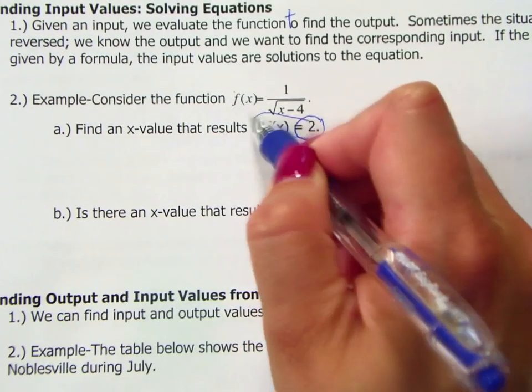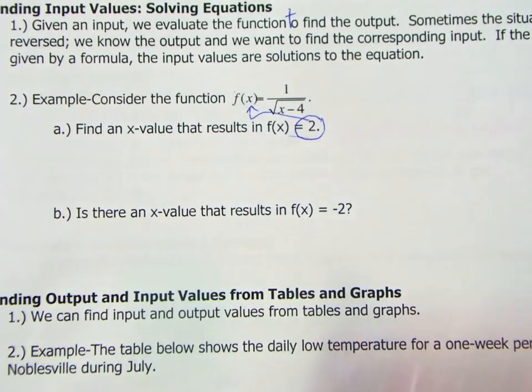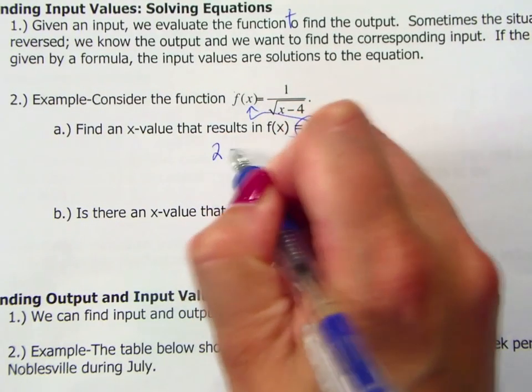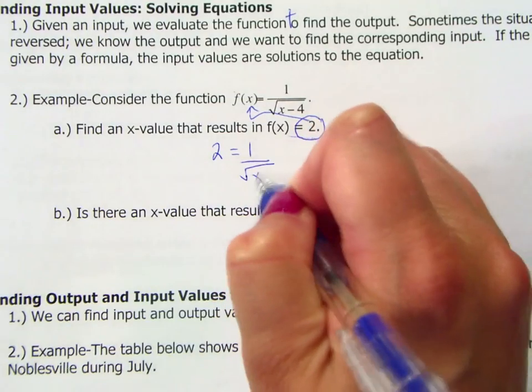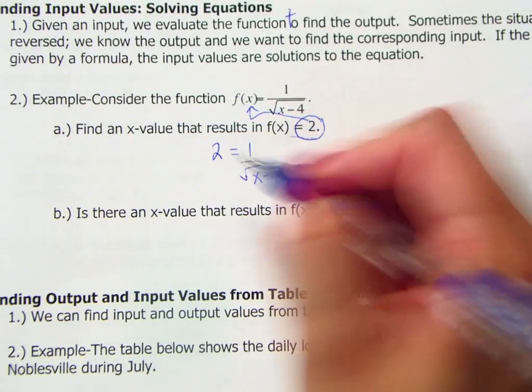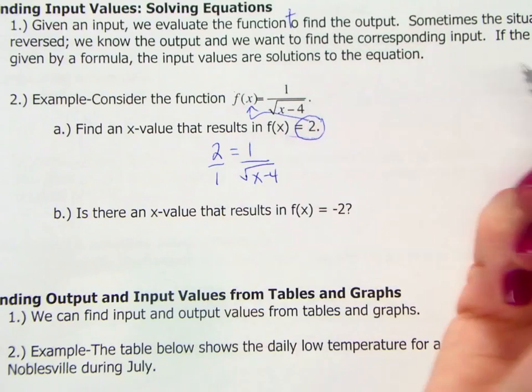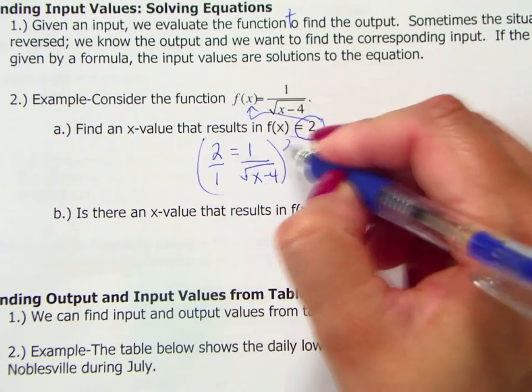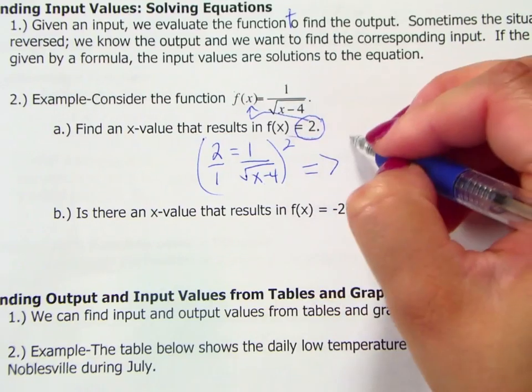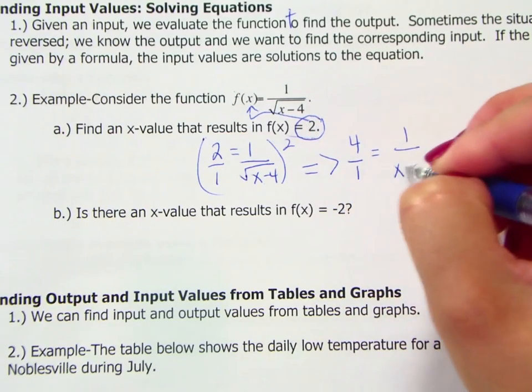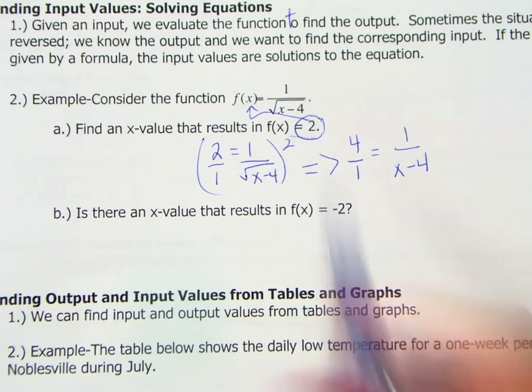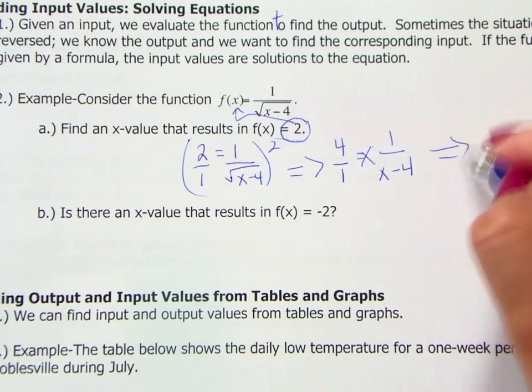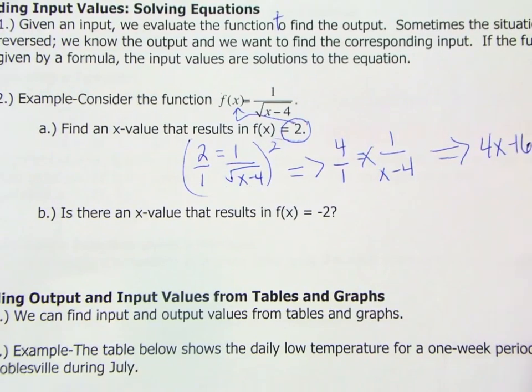Part A says to find an x value that results in f(x) equals 2. So what they're saying is your value of f(x) is 2. So instead of plugging this into the input, we're plugging it into the output because that's what it is. So 2 equals 1 over the square root of x minus 4. Let's see, if I put that over 1, I still need to get rid of that radical. So I'm just going to square everything. So that would be 4 over 1 equals 1 over x minus 4. I needed to get rid of that radical. If I square everything, that does the job. And then I can cross multiply and solve.